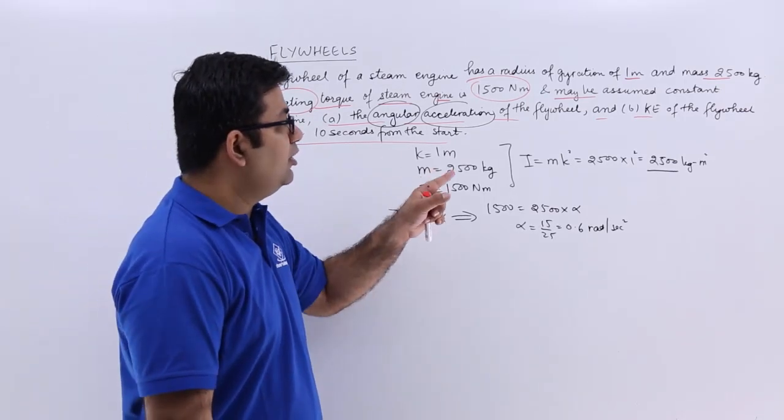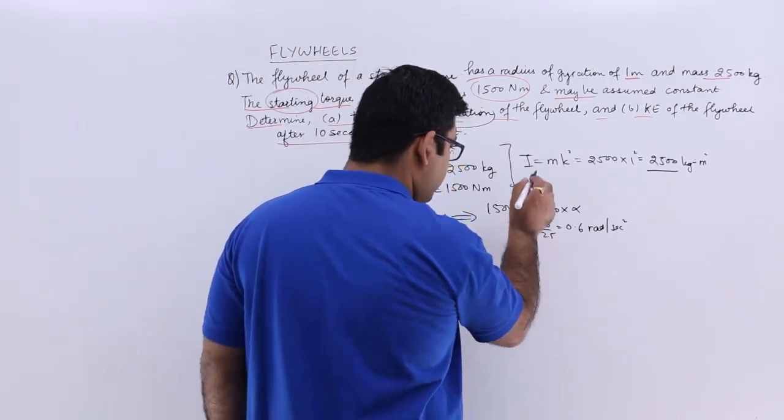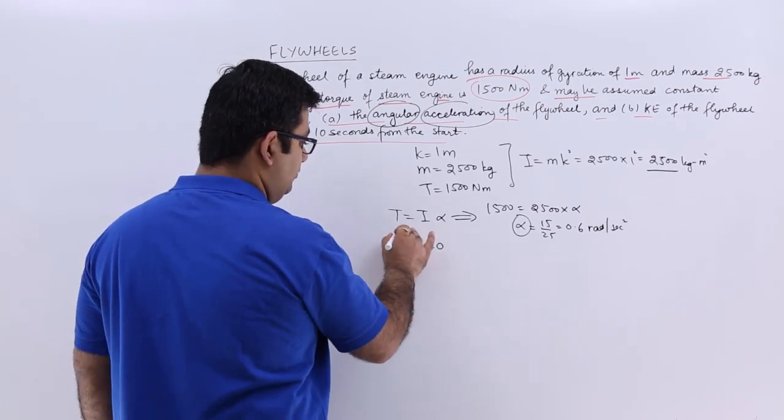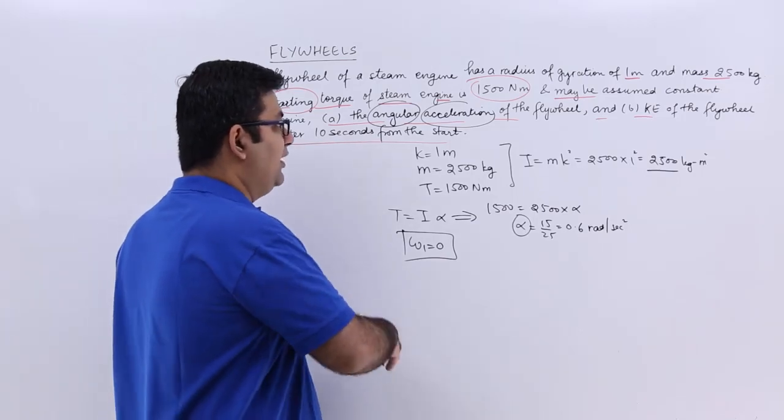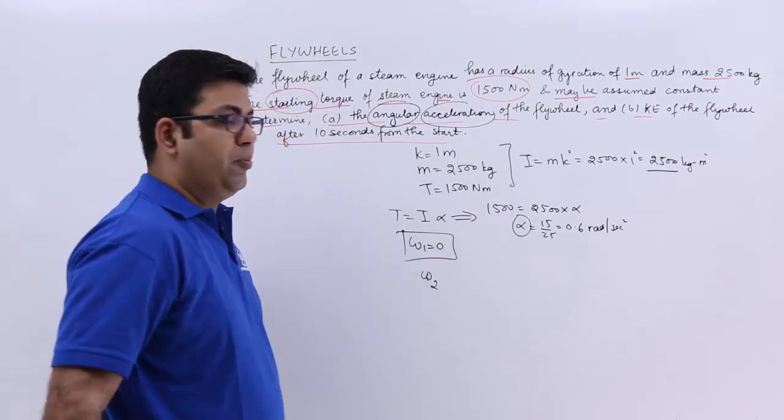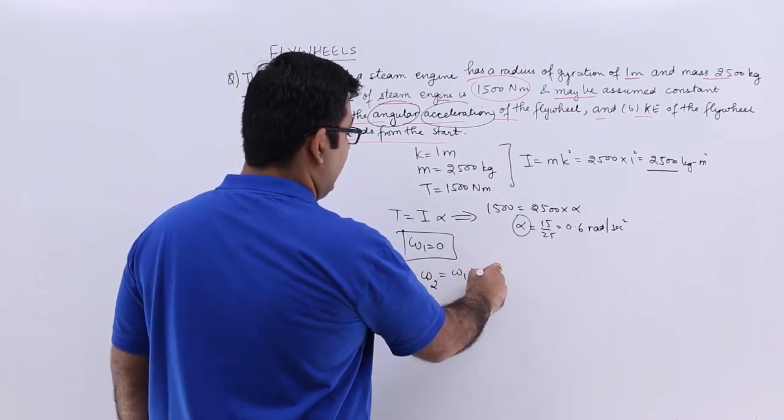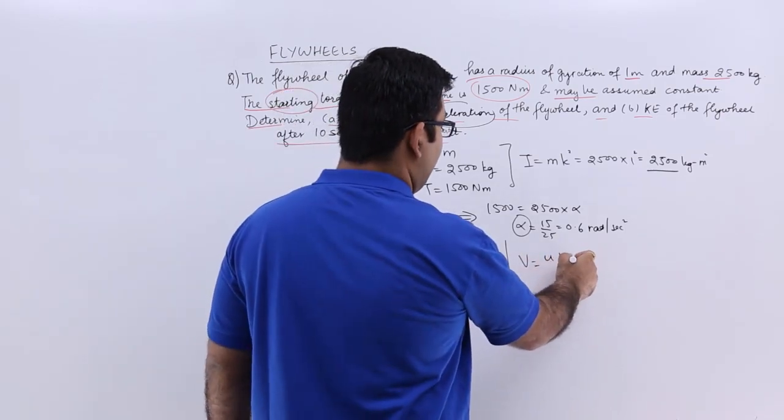Now for the kinetic energy of the flywheel after 10 seconds from the start, you have the acceleration. The initial velocity is 0. After 10 seconds, the velocity becomes omega 2, and that is omega plus alpha t. This is analogous to v equals u plus at.